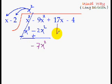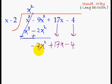And you simply drop down these remaining terms. So this is a new dividend. And once again we repeat the same process. That is we divide the first term of this new dividend by the first term of this divisor. -7x² divided by x is -7x. And once again we multiply this answer term with all the terms of the divisor. -7x times x will give us -7x². -7x times -2 will give us +14x.